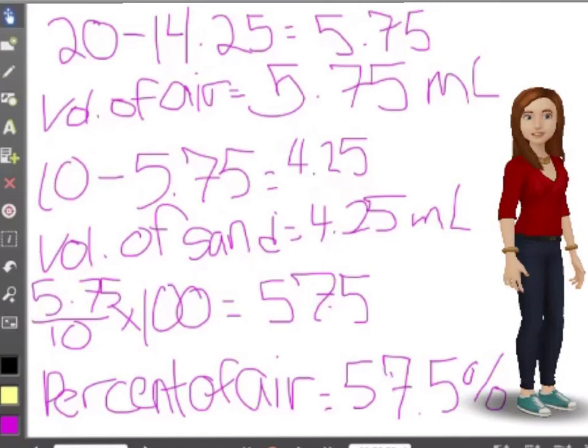To find the volume of sand, you would subtract the volume of air from the volume of the mixture, which would come out to be 4.25 milliliters.